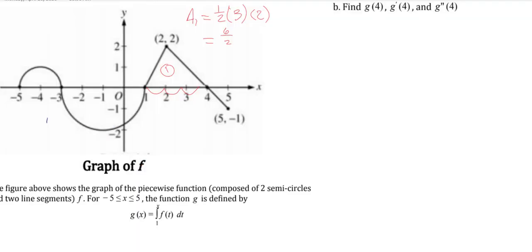Now here for part B, we're being asked to find g of 4, g prime of 4, and g double prime of 4. We've already done the first part in part A, because we're taking our function that's defined as g of x equals the integral from 1 to x of f of t dt.